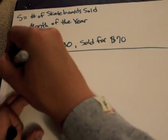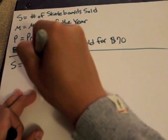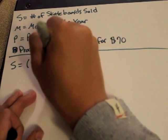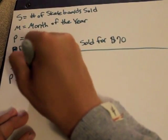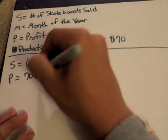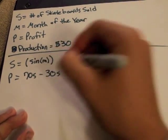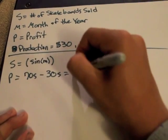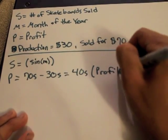So now we're going to start out with S equals sine M and P equals $70, that's how much the board is sold for, minus $30, which is how much it costs to produce it. And that equals $40. And that is the amount of profit from each board.